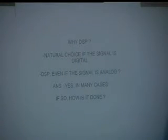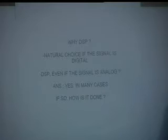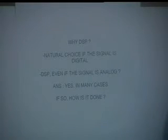Even if the signal is analog, one often prefers to use DSP, and the reasons are many. DSP has many advantages over analog signal processing (ASP), and many times it is a less costly proposition. Digital ICs are available off the shelf at very low cost, and therefore in many cases analog signal processing gives way to digital signal processing, even if the original signal is analog.